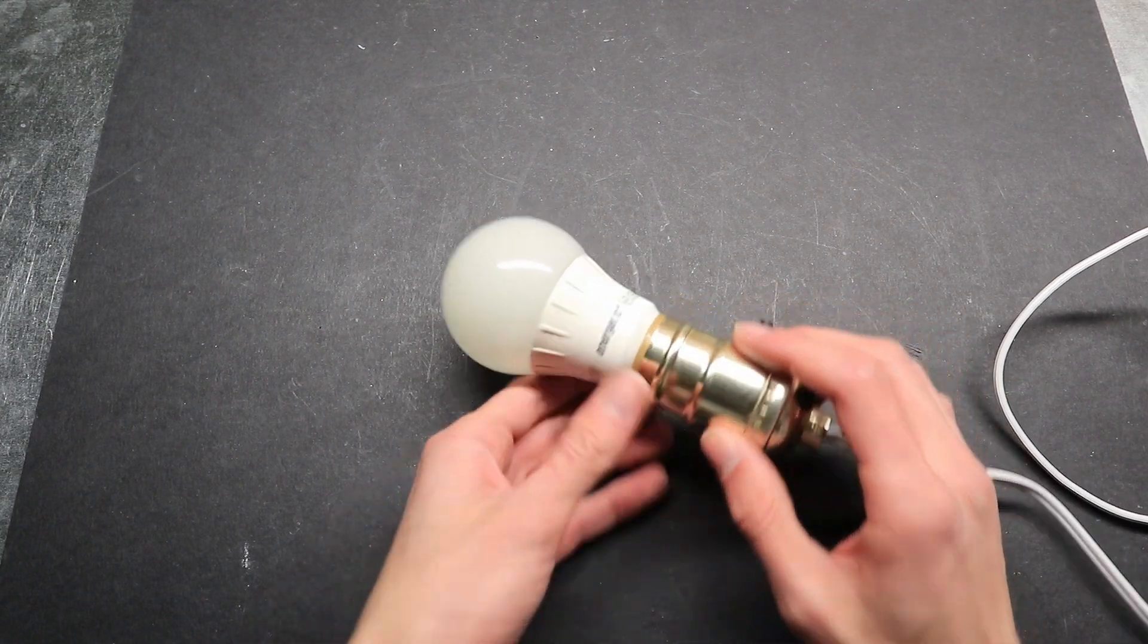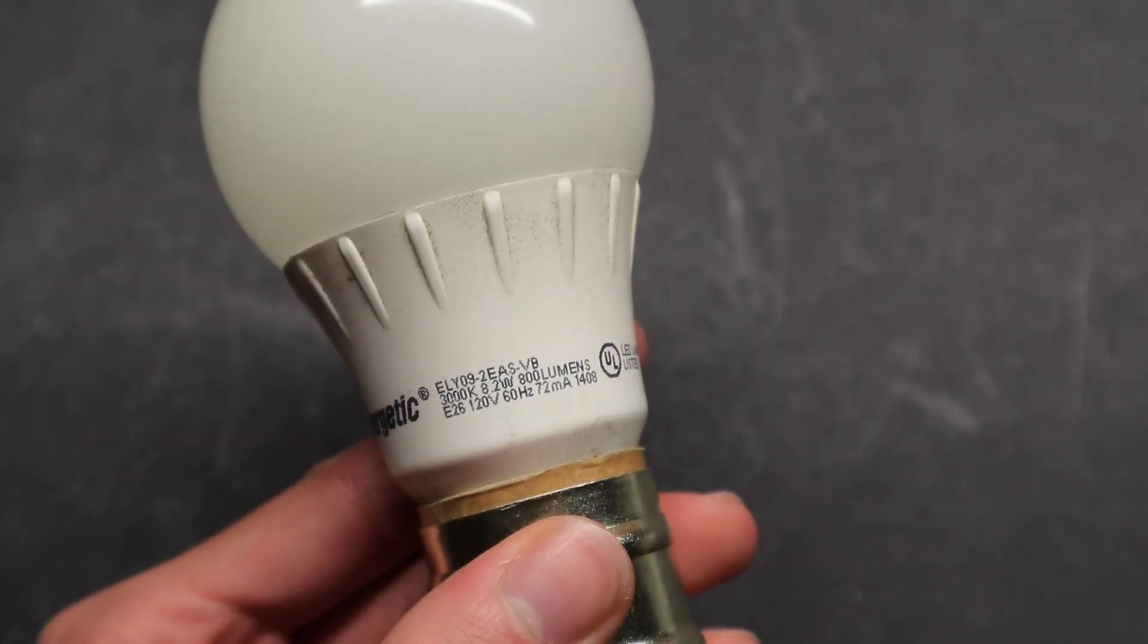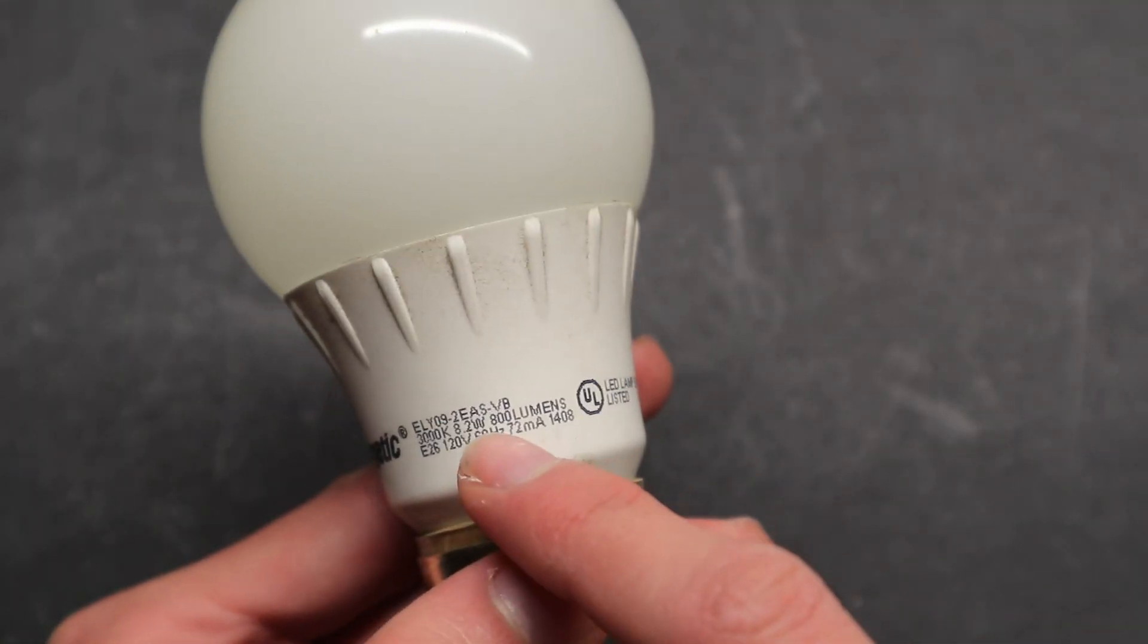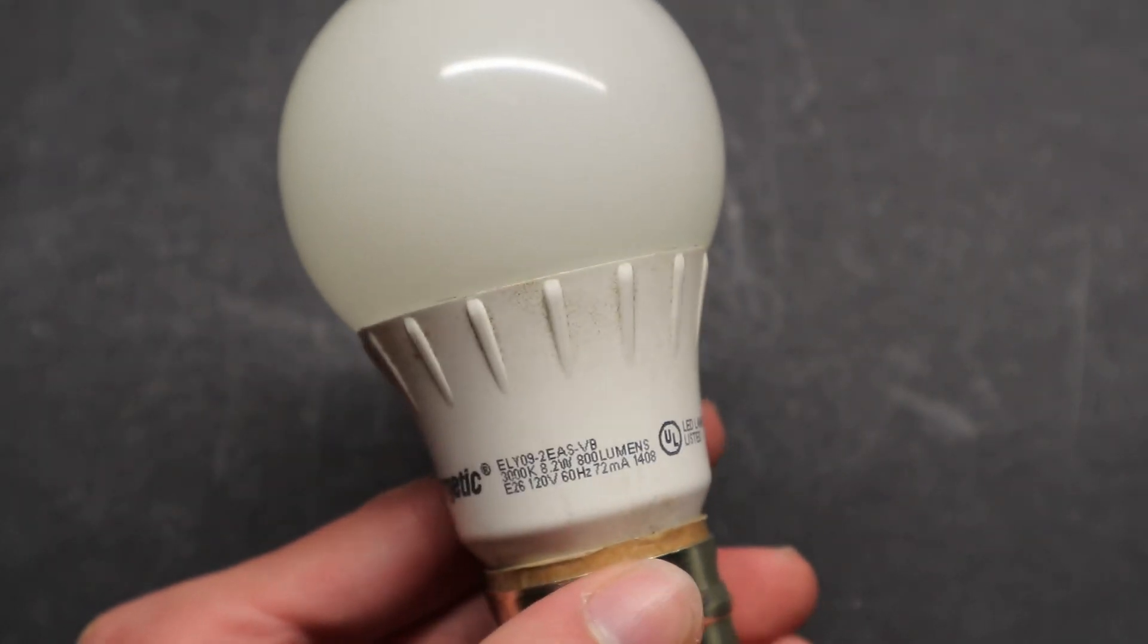Today I'm going to look inside another burnt out LED light bulb. This one, unlike all the other ones I've looked in, is an 8.2 watt 800 lumens one, which is designed to replicate a 60 watt incandescent light bulb.